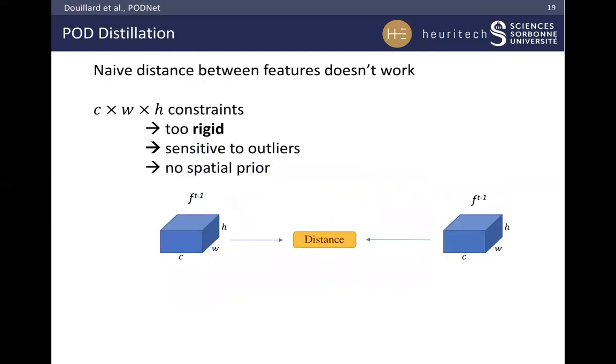Naively, we can constrain the features of both models to be close. However, it has two drawbacks. First, it produces C times W times H constraints, making our model too rigid. Every pixel must be constant. Second, if the model produces an outlier, our current model will be affected, and probably in a bad way. Third, we do not exploit the spatial dimension, which could be an improvement.